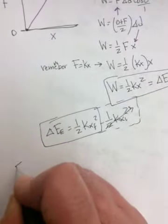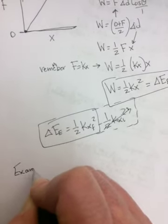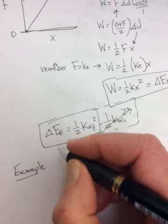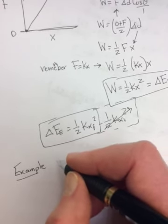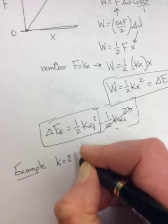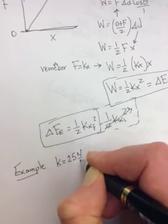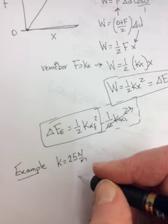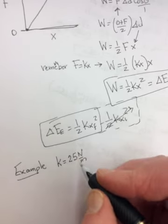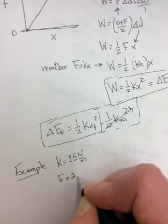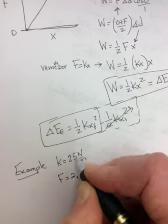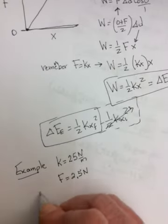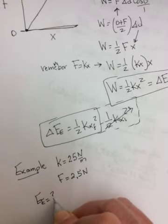Maybe first let's do an example, just because there's time on this clock. So an example would be a spring with a spring constant of 25 newtons per meter, so K is equal to 25 newtons per meter, has 2.5 newtons of force applied to it to stretch it. So F is equal to, so that one's 25 and this one's 2.5. And the question is, what's EE? What is EE equal to?